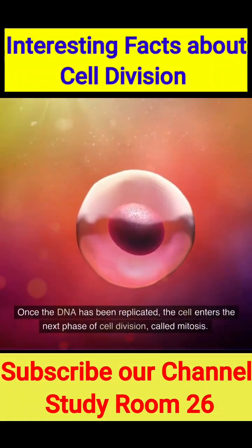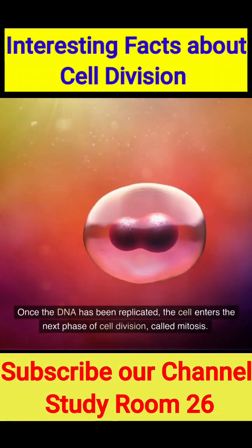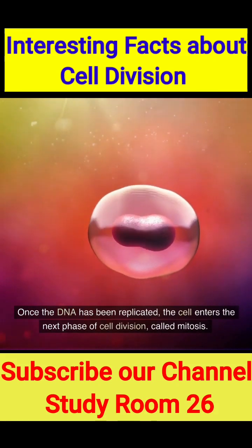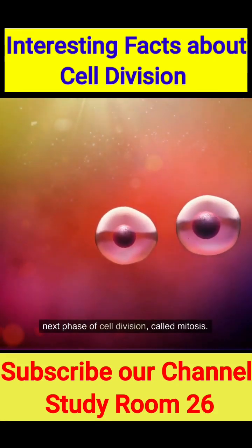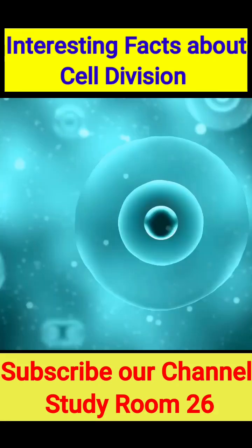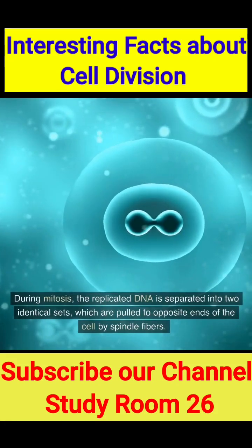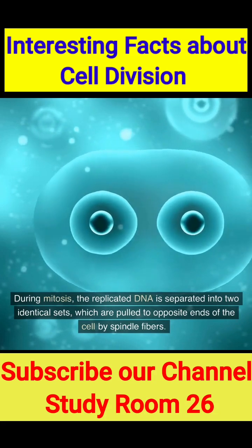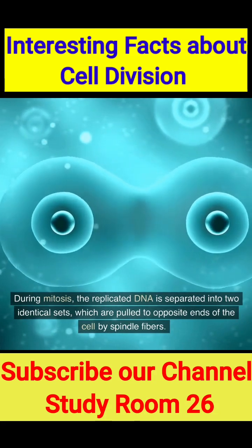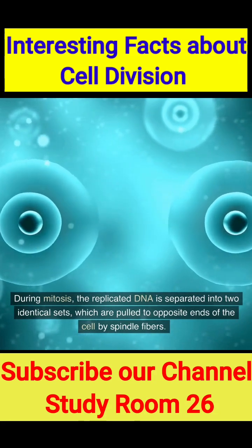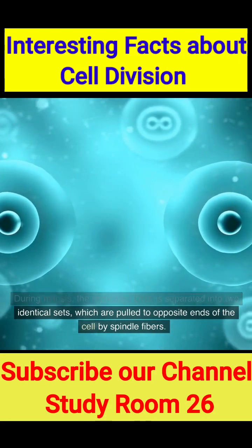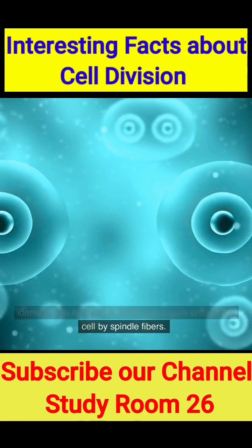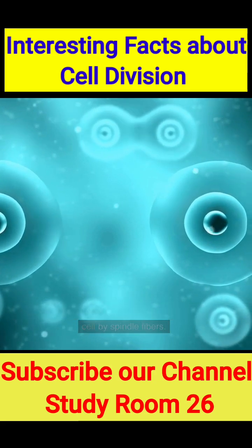Once the DNA has been replicated, the cell enters the next phase of cell division, called mitosis. During mitosis, the replicated DNA is separated into two identical sets, which are pulled to opposite ends of the cell by spindle fibers.